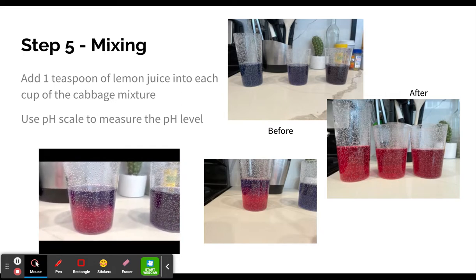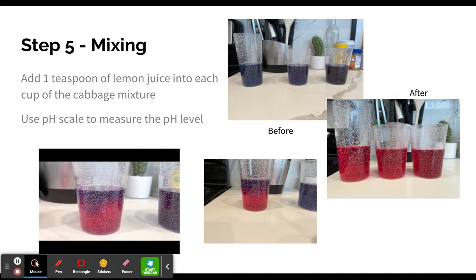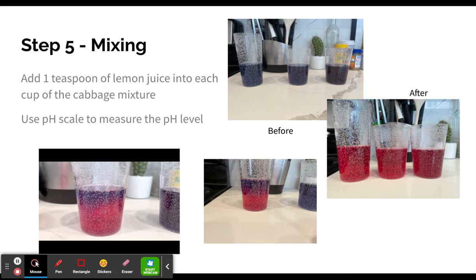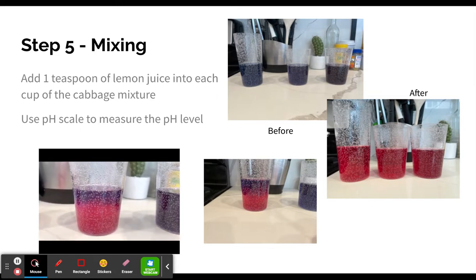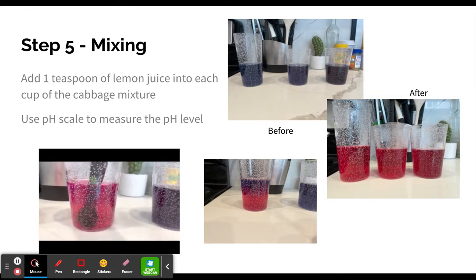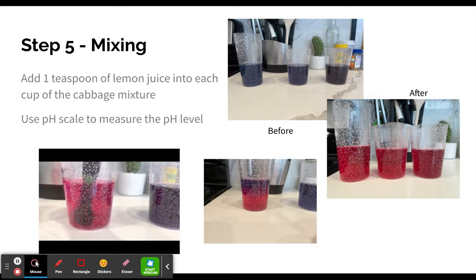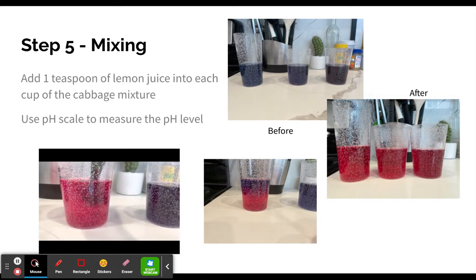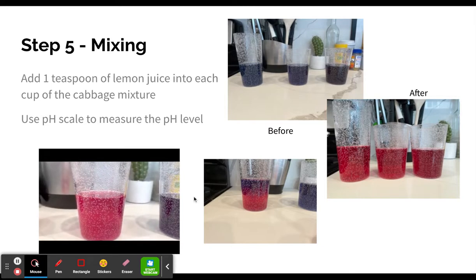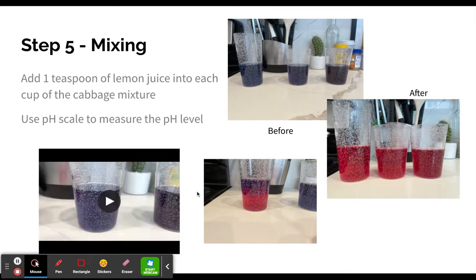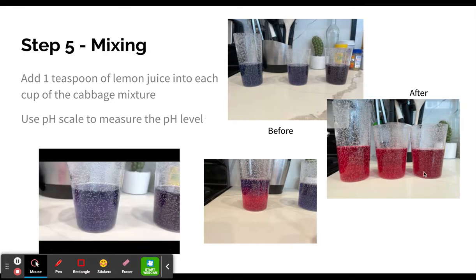So you see the lemon juice is starting to react with the water mixture on its own. And then you're just going to stir it to make sure that it fully incorporates together, so you have an accurate result. Once this is finished, you are going to use a pH scale to measure the pH level through the color you see in your cup.